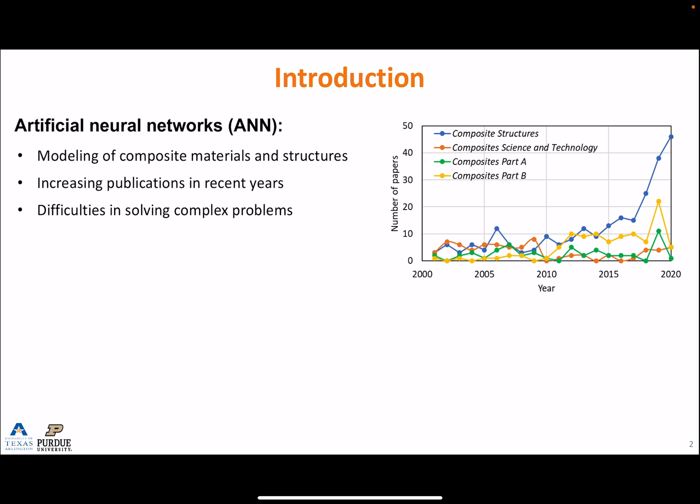Artificial neural networks, or ANN models, have been increasingly used for the modeling of composite materials and structures. This figure shows the number of papers with neural network as keyword in some popular journals in composites. Clearly, we can see an increasing trend of using neural network models in composites. Despite the fast-growing research in ANN models, the application of ANN models in some difficult composite problems is still very limited. So what are the real benefits we can obtain from the ANN model, and how can we really benefit from it?